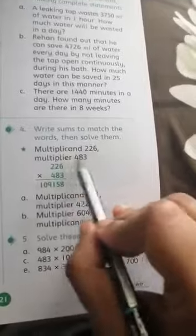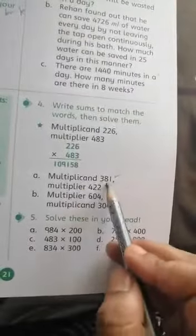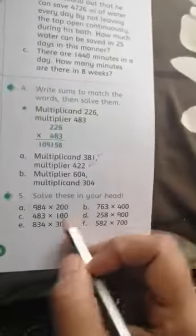Now write sums to match the words and solve them. Multiplicand and multiplier - multiplicand means that is your first number and that's your second number. In the same way, you have to label them. Solve these in your head and join to the correct answer.